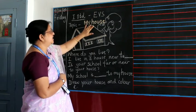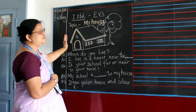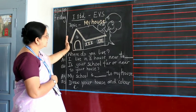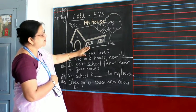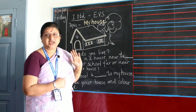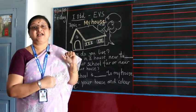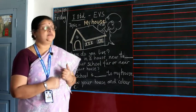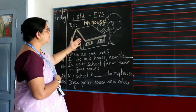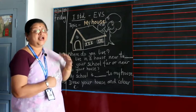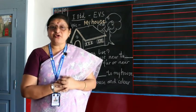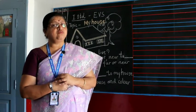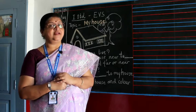The topic today is 'My House.' I have on the board a simple house. A house should be ventilated, a house should have air to come in. It will have a door, a roof, and then you have windows for the house.